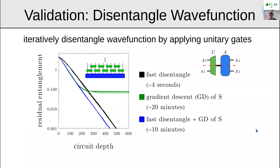To validate this algorithm, I consider using it to disentangle a wave function by applying many unitary gates to it. I have some wave function drawn in blue and I want to disentangle it using layers of unitary gates, where each unitary is calculated by applying this algorithm to minimize the entanglement across one of the vertical red lines. In each layer, the unitaries are computed independently — I apply this algorithm once for each unitary.